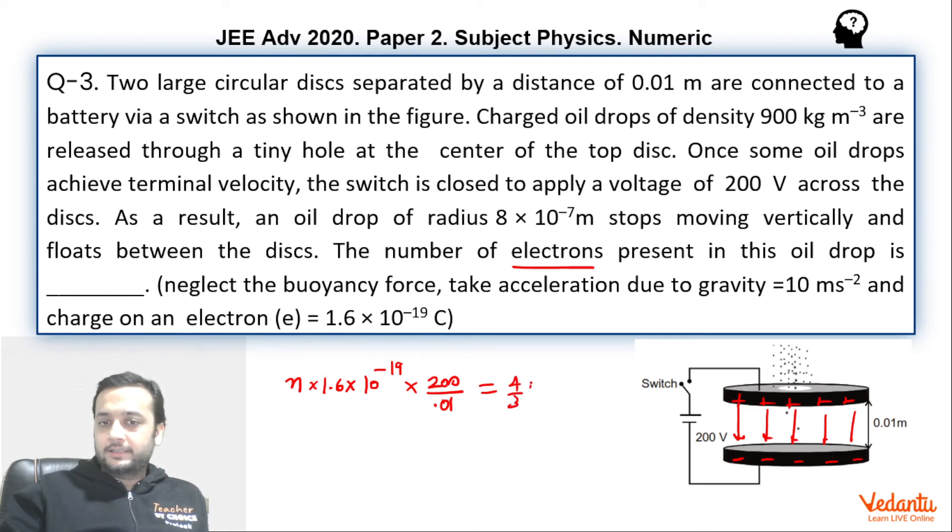Which is 4/3 π r³. r is given 8 × 10^-7 whole cubed. This is volume times density of the oil, which is 900, times gravity, which is 10, given in the question. Hence, you can find the value of n over here, which on solving will approximately come out to be very close to 6.